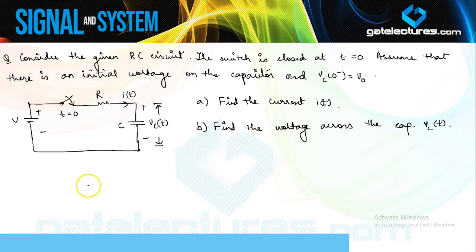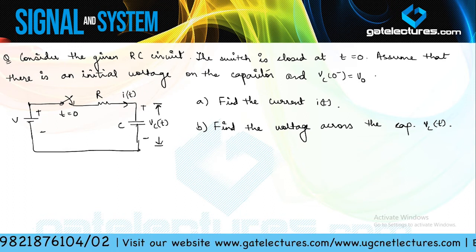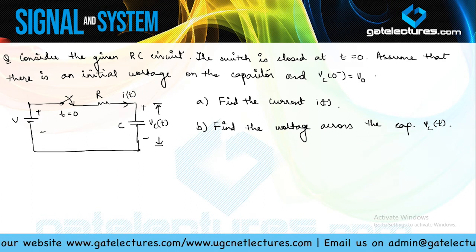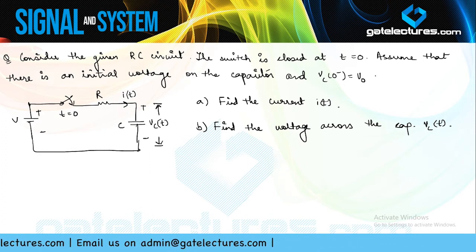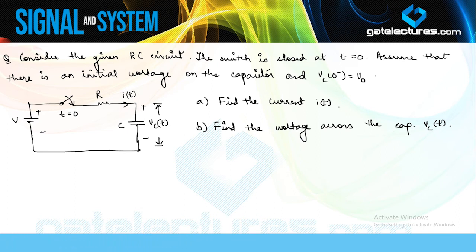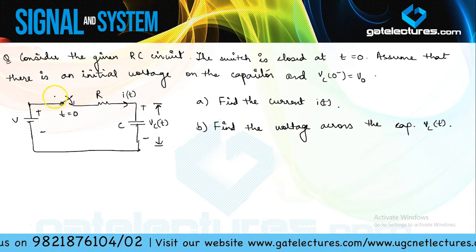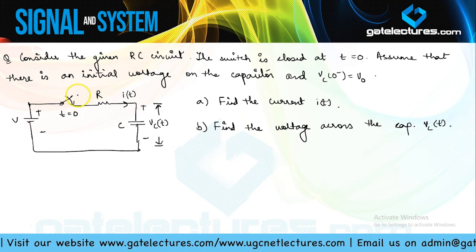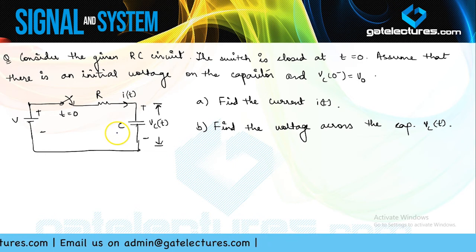Now look at this question. They have given a RC circuit in which switching action is taking place. You will study switching action in network theory in detailed explanation — Laplace is going to help you there a lot. The switch is closed at t = 0; before t = 0, the switch was open. This means no initial voltage was stored in the first capacitor.